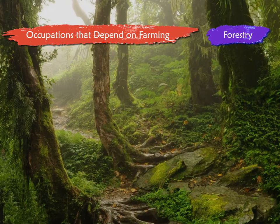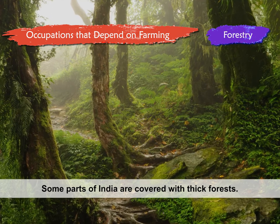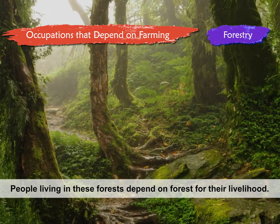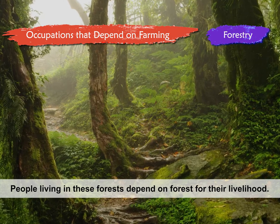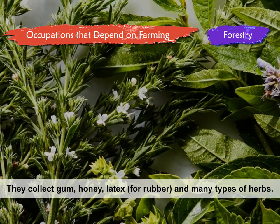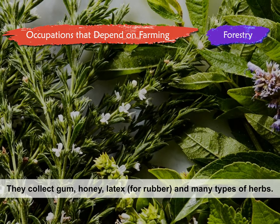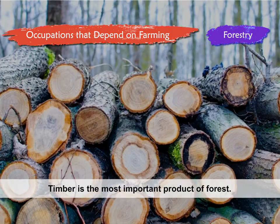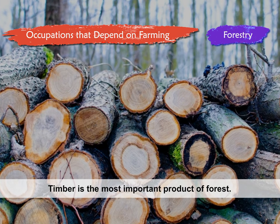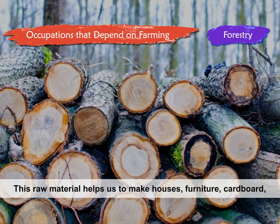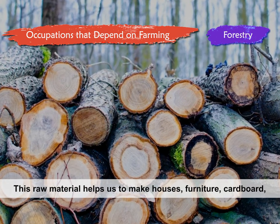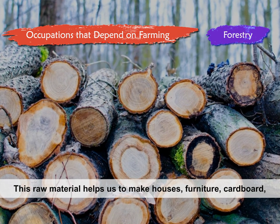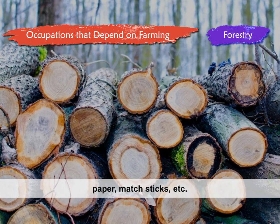Forestry. Some parts of India are covered with thick forests. People living in these forests depend on forests for their livelihood. They collect gum, honey, latex for rubber, and many types of herbs. Timber is the most important product of the forest. This raw material helps us to make houses, furniture, cardboard, paper, matchsticks, etc.